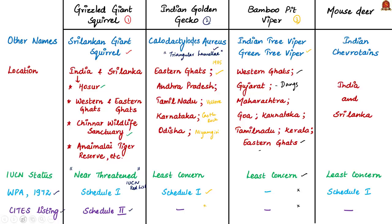The Mouse Deer, also known as Indian Chevrotain, is found in India and Sri Lanka. It occupies a range of habitats from evergreen forests to plantations. Other than being preyed upon by carnivores like dogs, tigers and leopards, Indian Chevrotain plays an important ecological role as seed dispersers. The main threats are hunting by local communities — either for sport or wild meat — and forest fire, as they are sensitive to habitat loss, alteration and degradation. This species is listed as 'Least Concern' by the IUCN Red List and is categorized in Schedule I of the Wildlife Protection Act of 1972, but finds no mention in the CITES list.